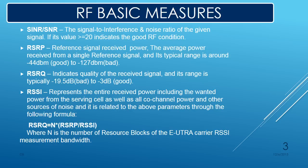We cannot say a particular value for this question because it will be varying from one mobile to another. It may happen that one mobile shows signal while another mobile shows no coverage in the same place for the same operator. This is because of the receiver sensitivity of a mobile — it differs from one mobile to another due to the type of material used to make the antenna inside your mobile. The answer is receiver sensitivity. Receiver sensitivity of a mobile lies between minus 110 dBm to minus 117 dBm, and it may vary. Similarly, UE receiver sensitivity lies between minus 127 to minus 130 dBm.